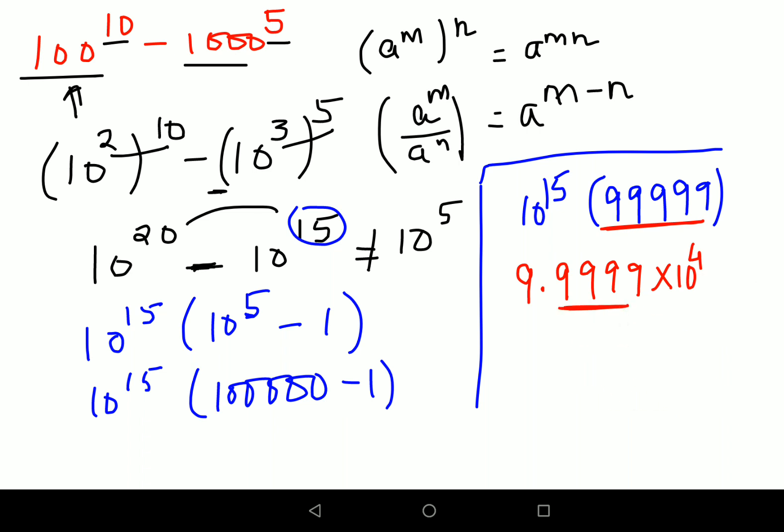And then there will be 10 raised to 15 as well. Now since here the bases are same, I can directly add the indices. So final answer would be 9.9999 into 10 raised to 4 plus 15 gets you 19.